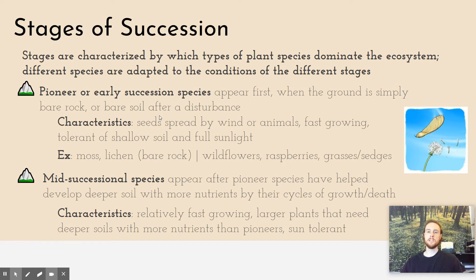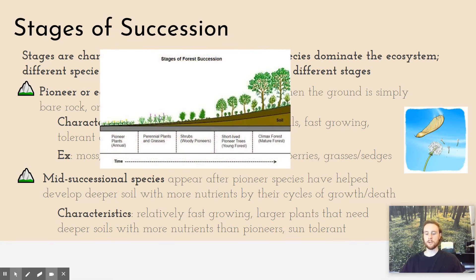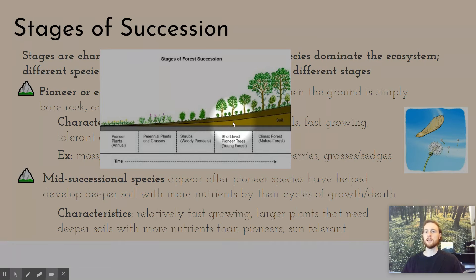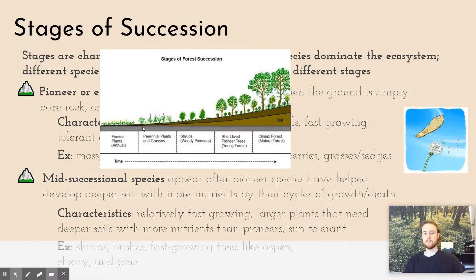Mid-successional species are going to be fast-growing and a little bit larger than pioneer species, though they grow a little bit slower. They typically need deeper soil with more nutrients than pioneer species could tolerate. They are also tolerant of full sunlight because there's no shade in the ecosystem yet. Looking at a diagram, it takes some time for shrubs and smaller trees to arrive because pioneers have to build up soil depth first, and these are species that take years to develop. Examples include shrubs and bushes, as well as fast-growing trees like pine and cherry.